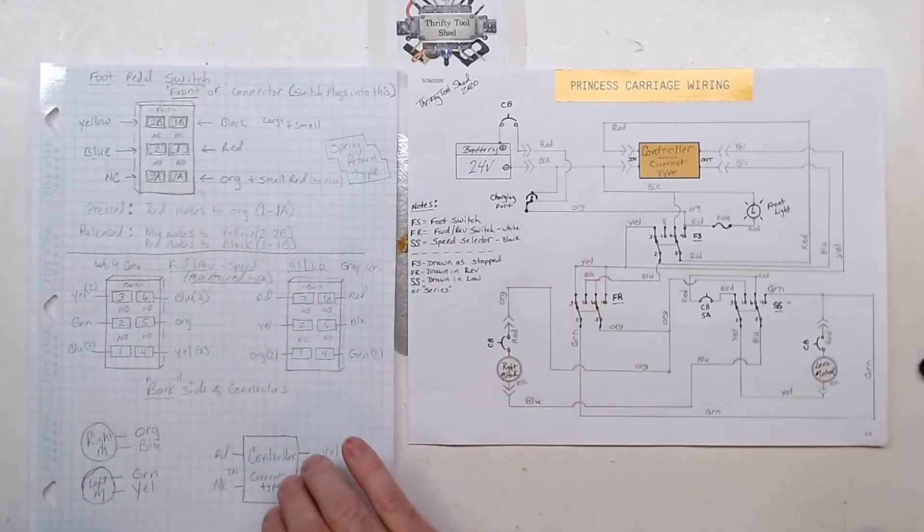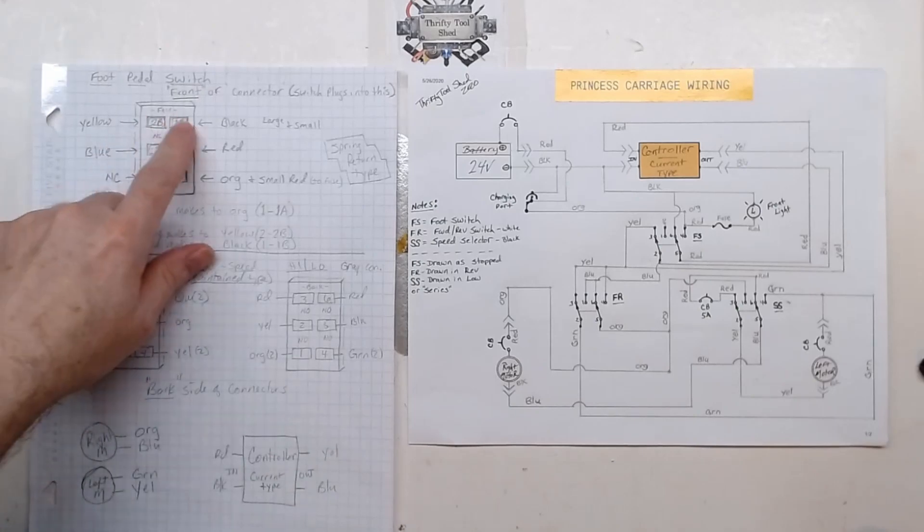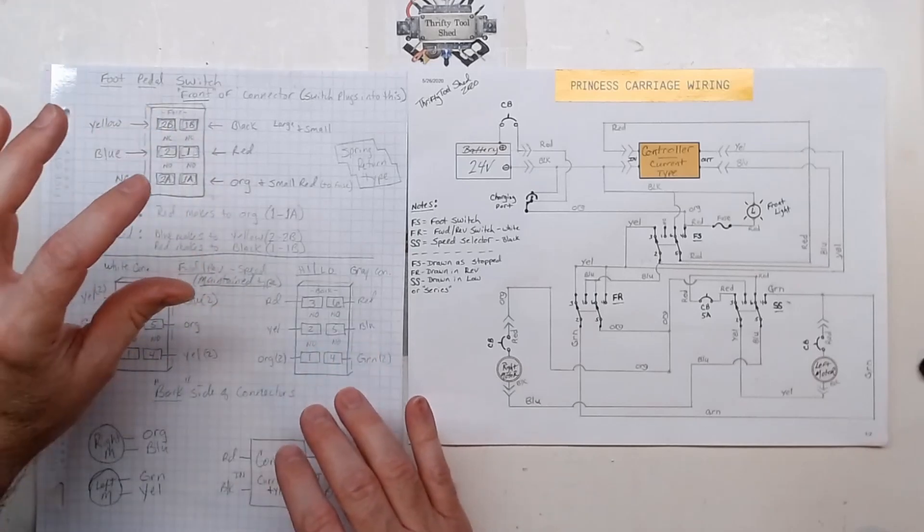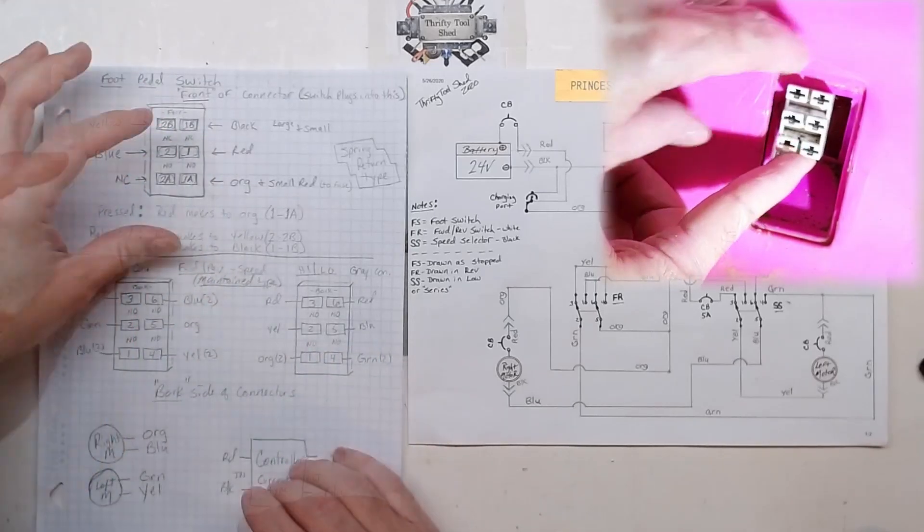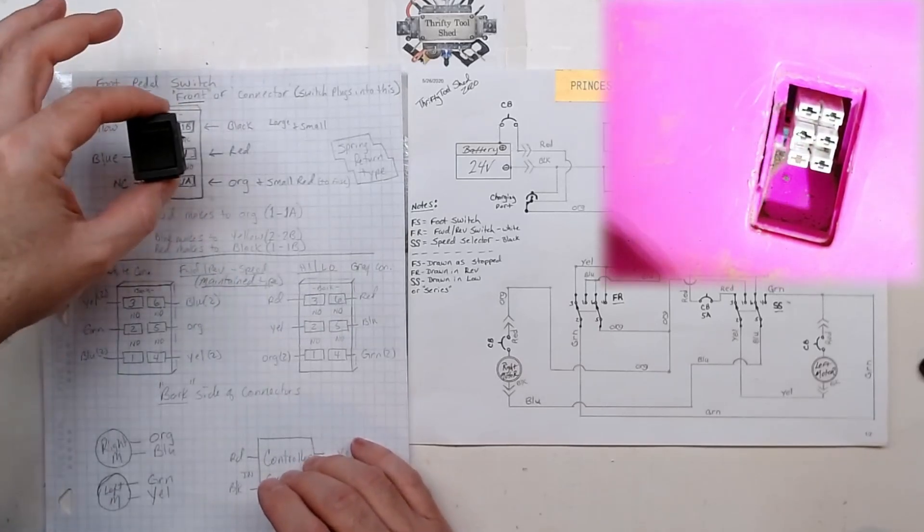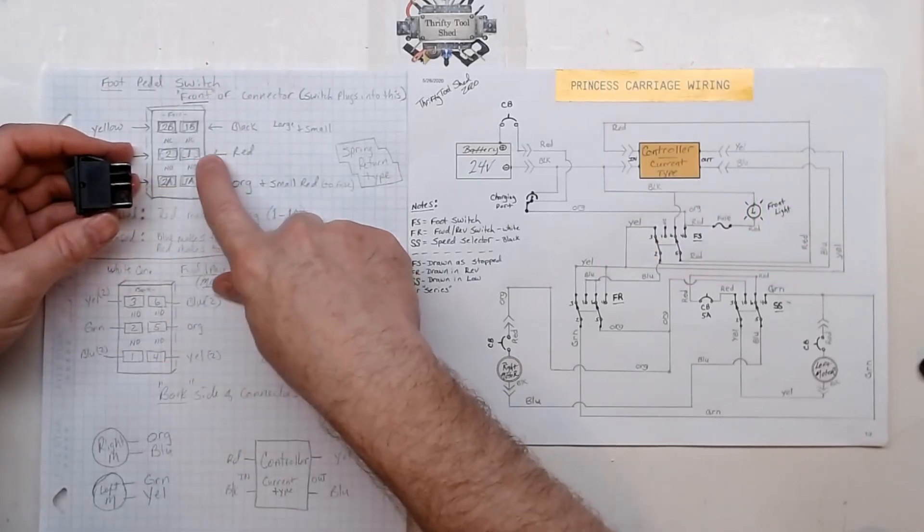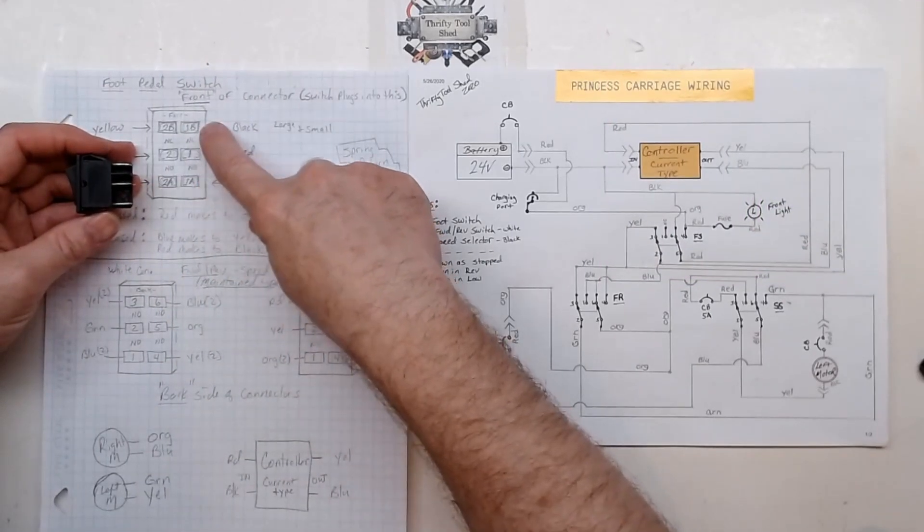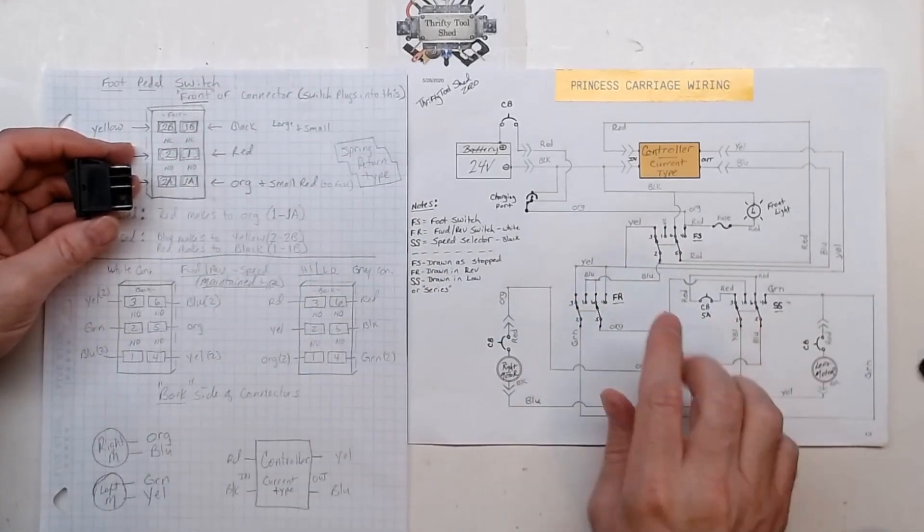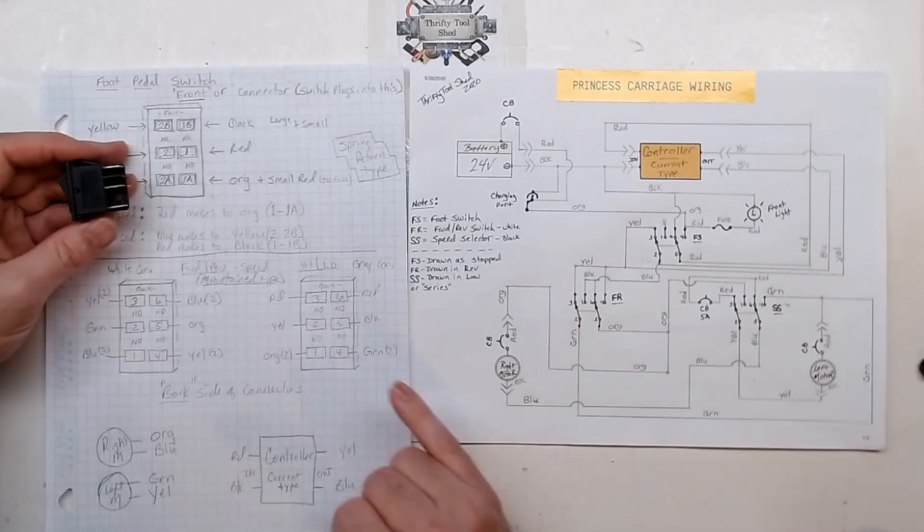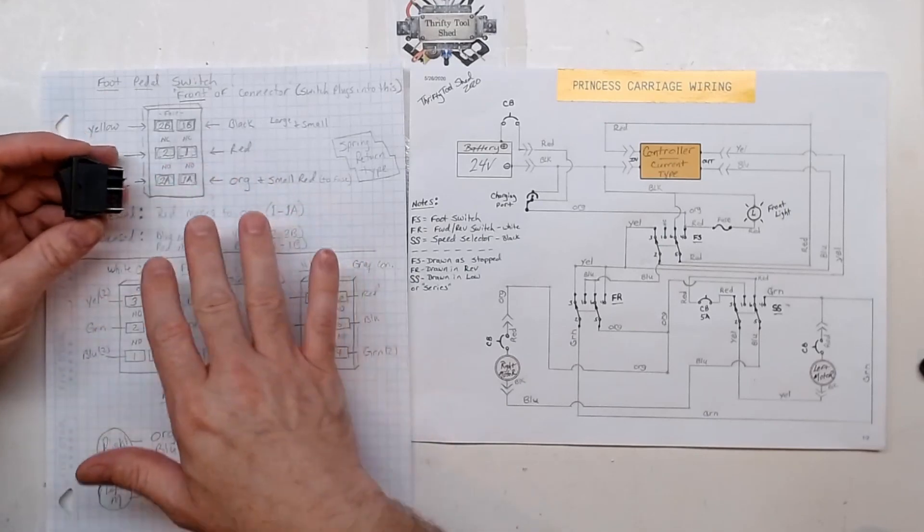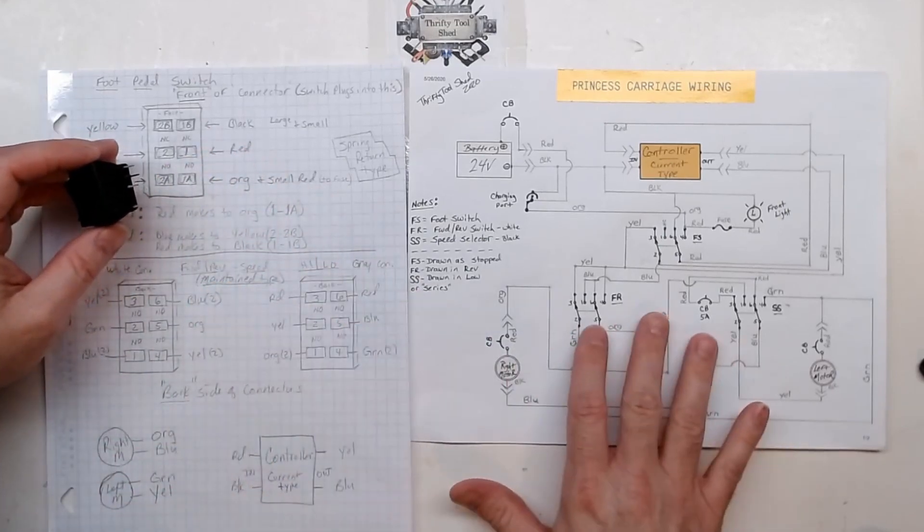First of all, on the foot pedal switch I drew this out showing the front of the connector because this one doesn't come out good enough on most of them to see the back. On this one I have it numbered as 1, 1a, 1b, 2, 2a, and 2b, though some switches use 1-2-3 and 4-5-6 numbering instead.